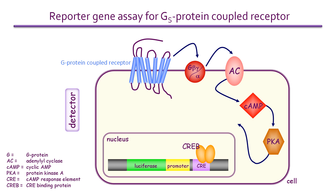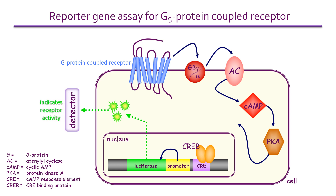CRE is part of a DNA sequence just upstream of the luciferase promoter, which is in turn activated. This promotes transcription of the luciferase gene, resulting in the production of luciferase protein. Luciferase generates a luminescent signal, which is detected optically and gives a direct readout of receptor activity.